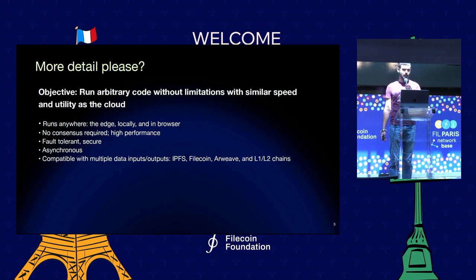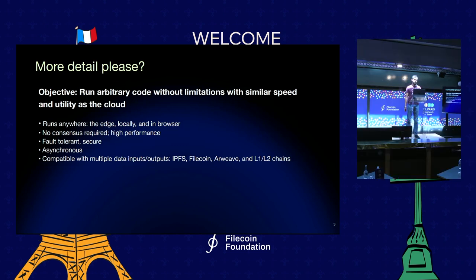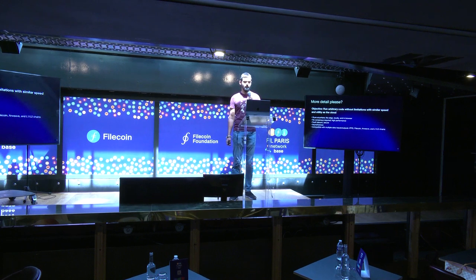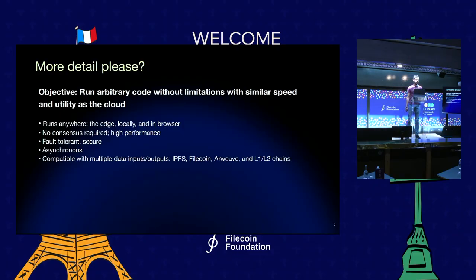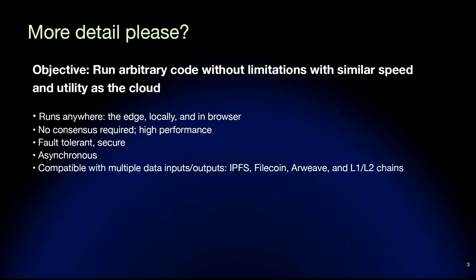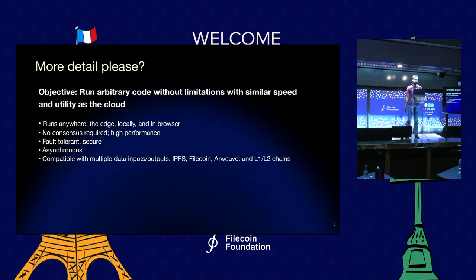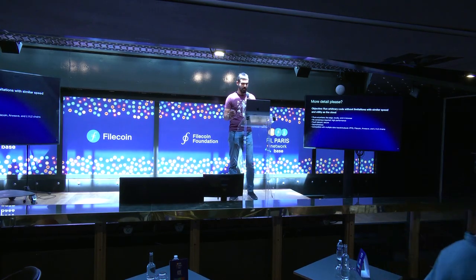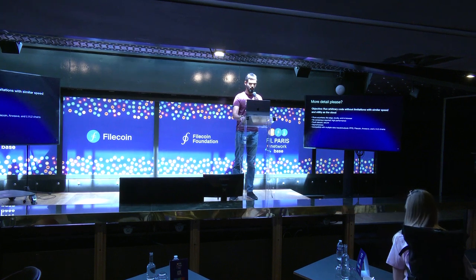In a bit more detail, the objective of Fluence protocol is to run arbitrary code without limitations with a similar speed and utility as the cloud. We want to run code anywhere — on the edge, locally, in the browser. We want consensus to be opt-in to reach high performance. We want to be fault-tolerant, secure, and asynchronous, meaning operations or function calls shouldn't be in sequence — we should be able to run them in parallel. And we want compatibility with multiple data inputs and outputs like IPFS, Filecoin, different chains, other protocols, and proprietary data sources.